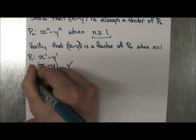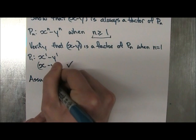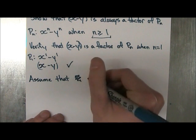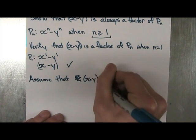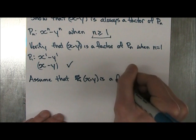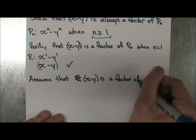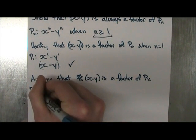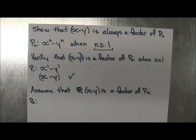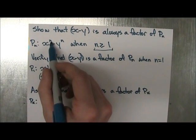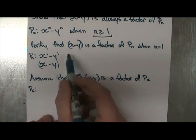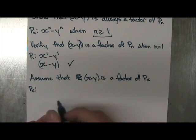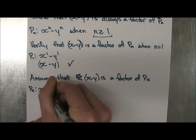So our second step is to assume that P_k, or assume that x minus y is a factor of P_k. And P_k is, and remember, you simply replace n with k for P_k. Because we've verified for one integer, now we're going to assume that this is valid for all integers of k. So x to the k minus y is a factor of P_k.